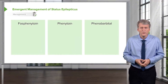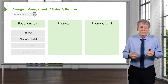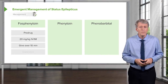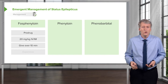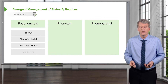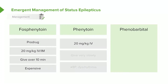Let's go through these drugs. Fosphenytoin is a pro-drug. It's given at 20 mg per kilo, either IV or IM, and it's given over 10 minutes. Because it's fosphenytoin, it can be given a little bit faster, and there's a benefit to that. The downside is it's expensive. Phenytoin is given at 20 mg per kilo IV — you may not give it IM — but you have to give it very slowly. As a result, it's a little more annoying and takes a little longer for the seizure to stop.